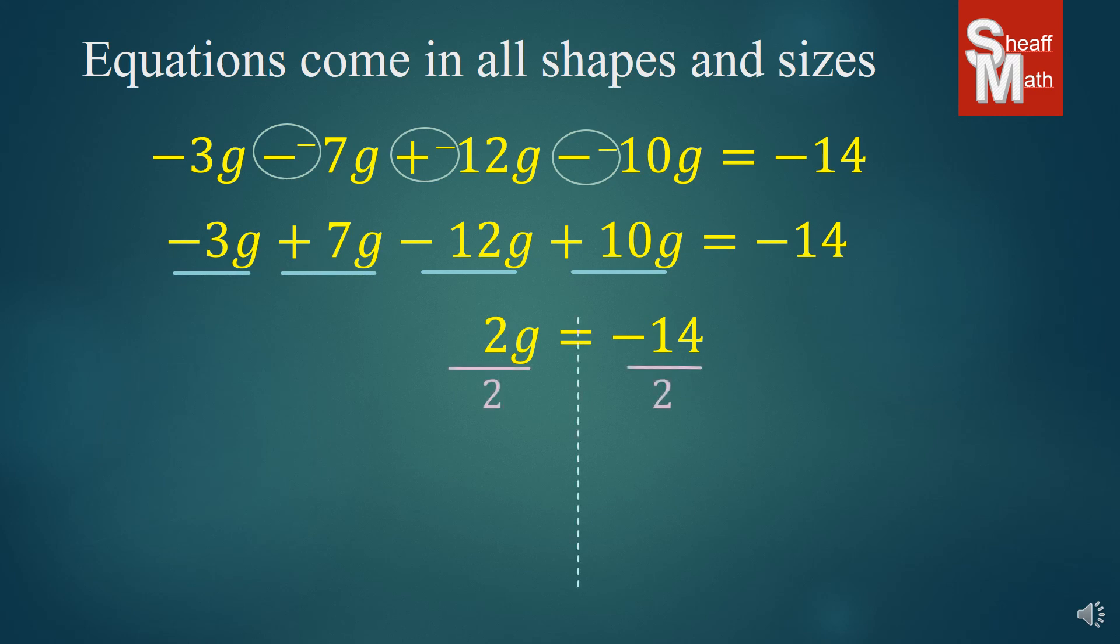We divide by negative 2 on both sides, giving us g equals negative 7.